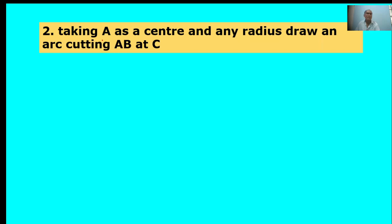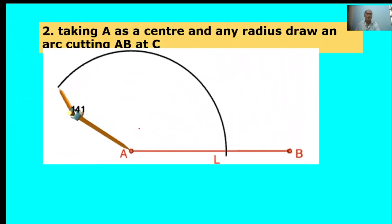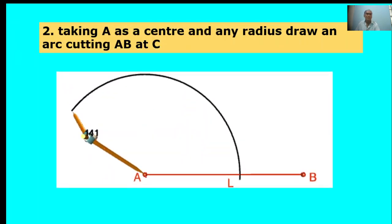Second point: Take A as center and any radius. Draw an arc cutting AB at C. Here, center point A. Take any radius and draw one arc.